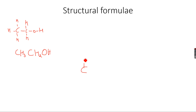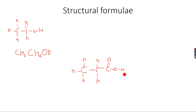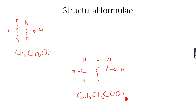Now let's take the example of propanoic acid again. So how we write the structural formula is: CH3, because this carbon is attached to three hydrogens, then it is attached to a carbon which is attached to two hydrogens, and it is attached to a carbon which is attached to an oxygen atom, another oxygen atom, and a hydrogen atom. So this is the structural formula for propanoic acid: CH3CH2CO2H.